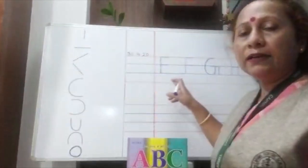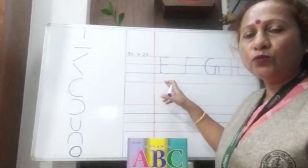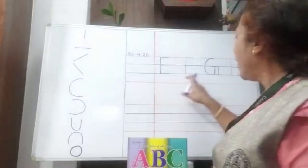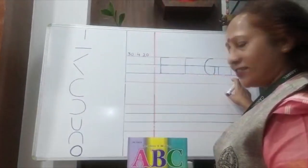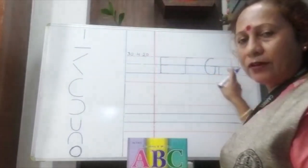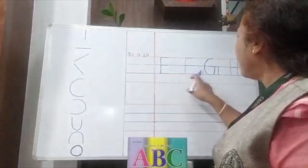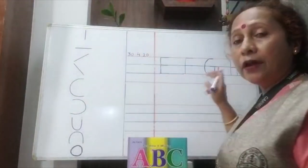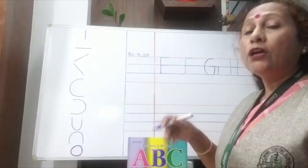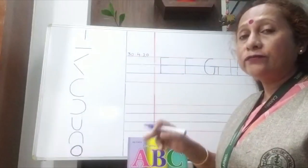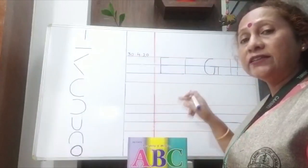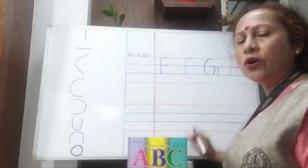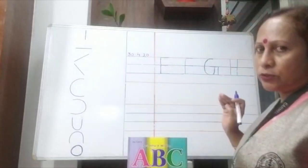How many characters are we writing today? E, F, G, H. These letters are E, F, G, H. Now, in this way, you will have to complete your whole entire page. The full entire page you have to do at home.